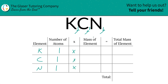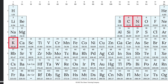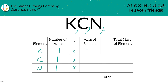Now we're going to multiply by the mass of each element. Where are these masses found? You guessed it — the periodic table. The mass of potassium is 39.10, carbon is 12.01, and nitrogen is 14.01, so we're going to write them in.